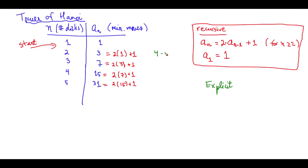3 is really just 4 minus 1. 7 here is really just 8 minus 1. 15 is 16 minus 1. And 31 is really just 32 minus 1.